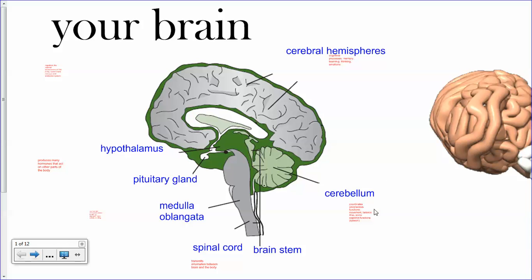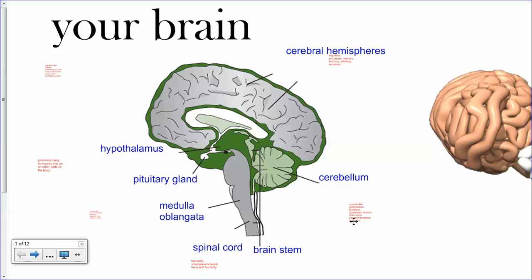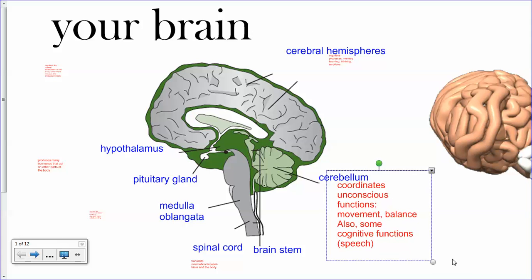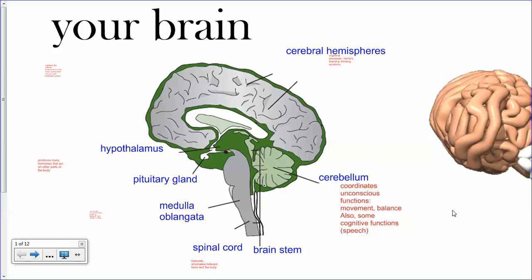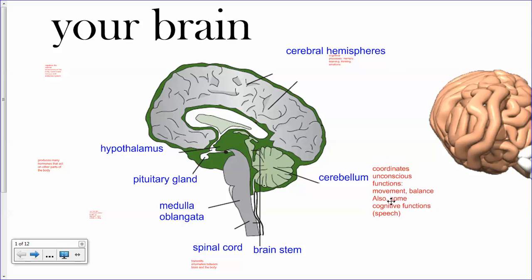Cerebral hemispheres, cerebellum — and you need to know the main functions of each of these as well. So let's start with cerebellum, because cerebellum actually sounds like 'cerebalance.' It coordinates unconscious functions: movement, balance, and also some cognitive functions.